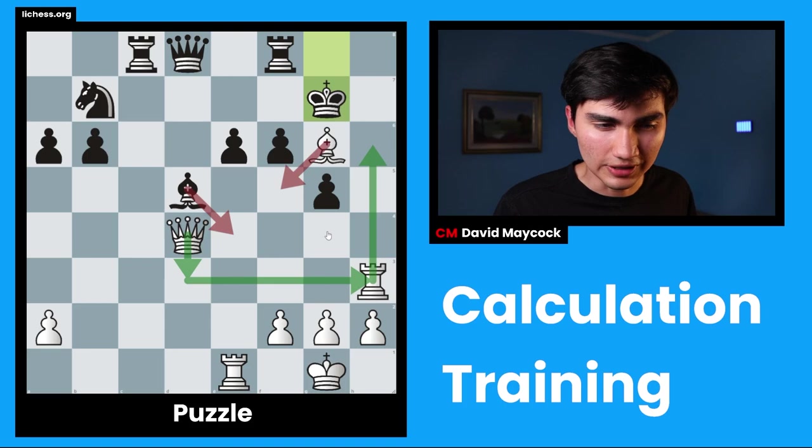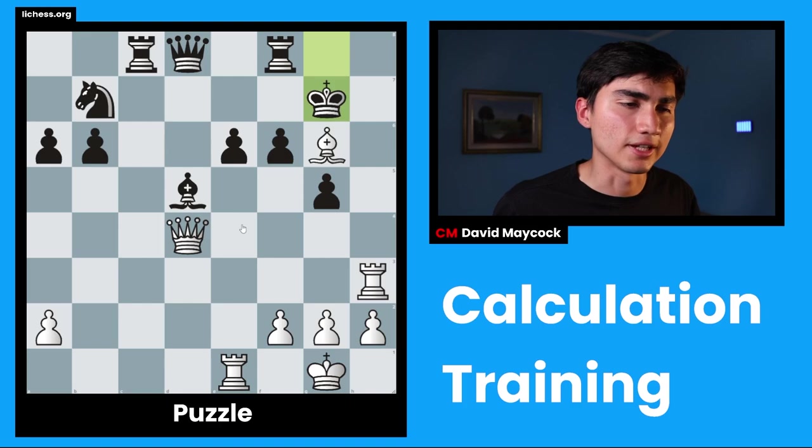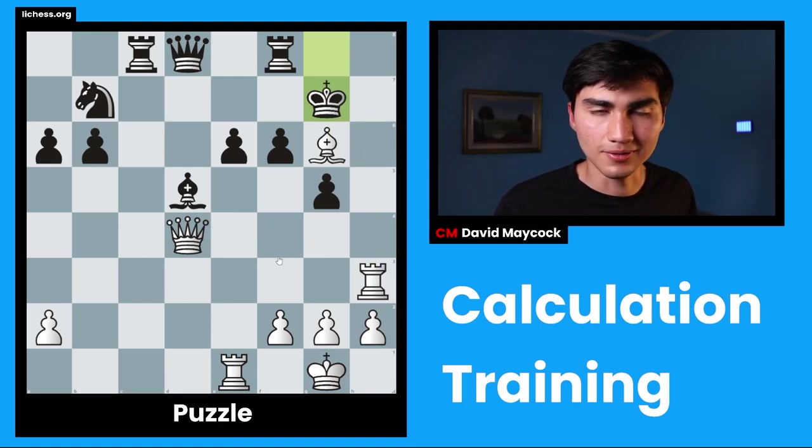Although queen h6 is not a threat because of king f5. Is the king escaping? I don't believe in that. I don't believe a king on f5 is going to survive. We've calculated some lines with rook h7. I'm just going to calculate the other candidate moves to stay on the safe side. But so far, I feel like rook h7 is the answer.